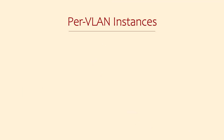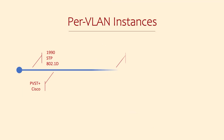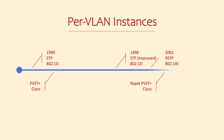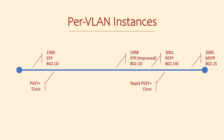The original spanning tree, known as 802.1d, has quite a few drawbacks in the modern network. Over time there have been a few improvements to the original protocol, and a few new variants of spanning tree — not all of which are shown here. Cisco even had a few proprietary versions which only worked with other Cisco switches. There have also been vendor-neutral versions that work on all switches, like RSTP.